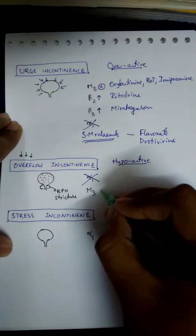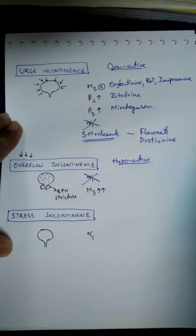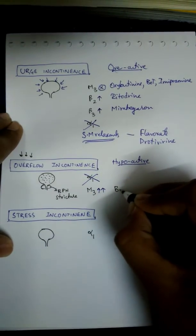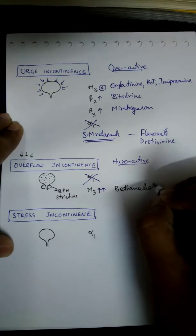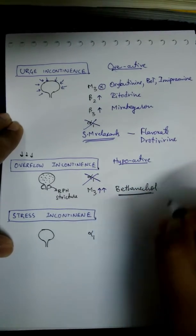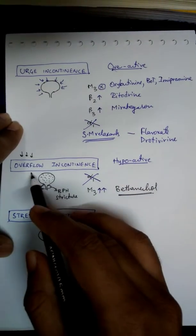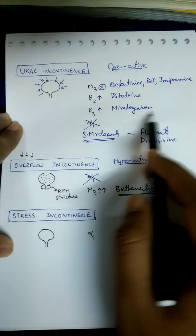Here also do not treat at the sphincter level. Directly increase the strength of bladder by giving bethanechol, which is M3 agonist. Bethanechol is choice of drug in overflow incontinence whereas ritodrine or mirabegaron is choice in urge incontinence.